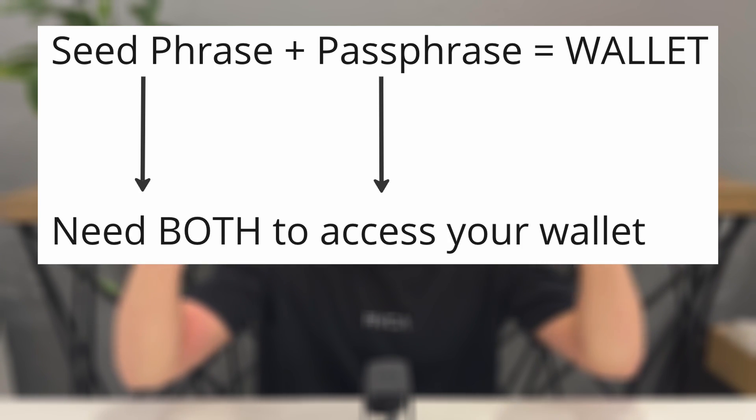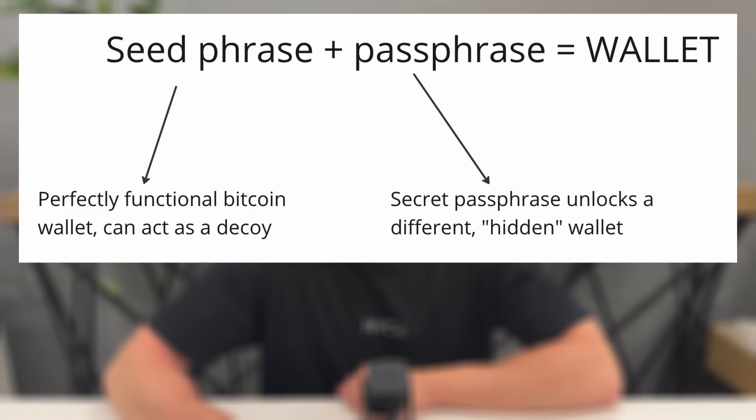Here is a good way to think about it: your seed phrase plus your passphrase together unlock your Bitcoin wallet. This allows you to keep the two parts separated, so if one is found, your wallet is not compromised. Your 12 or 24 words alone are also a perfectly functional Bitcoin wallet, which allows you to have a decoy balance. You could have a small amount of Bitcoin in your seed phrase, so if an attacker finds this, they think they have your coins — but little do they know that there is a passphrase needed to access your real Bitcoin stack.